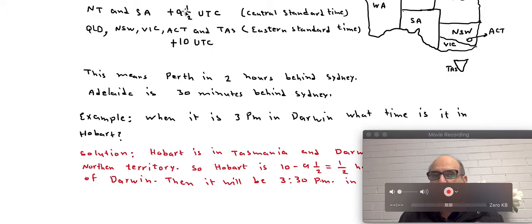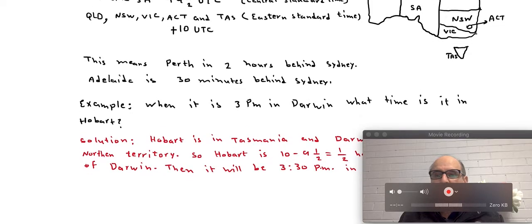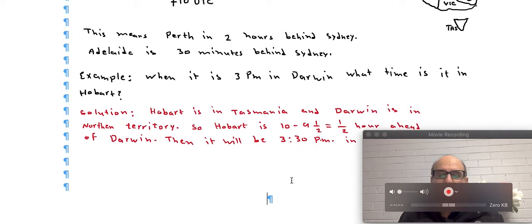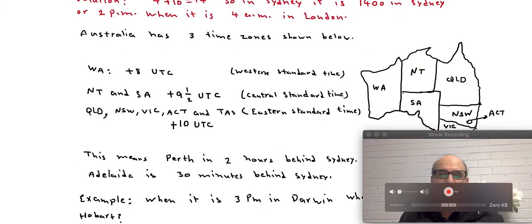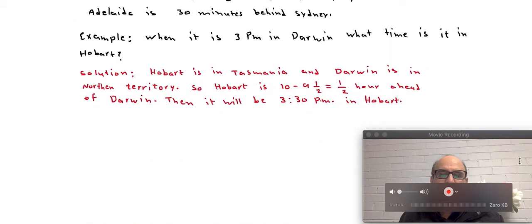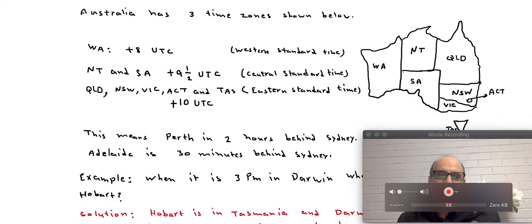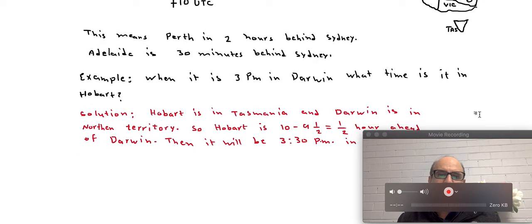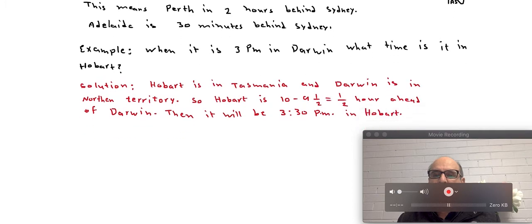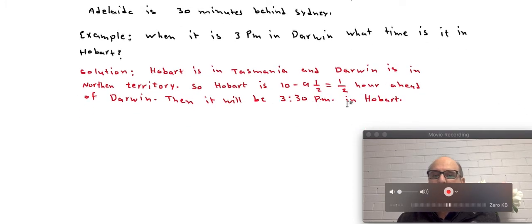So the difference is half an hour. So then Hobart will be half an hour ahead of Darwin. And so if it is 3 p.m. in Darwin, then we will have 3:30 p.m. in Hobart.